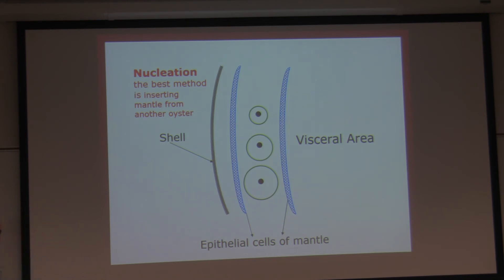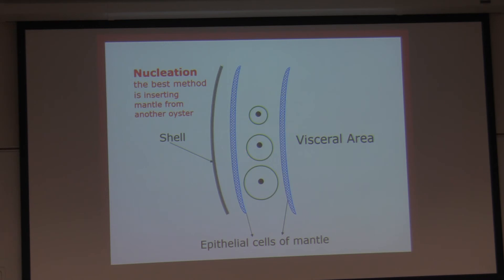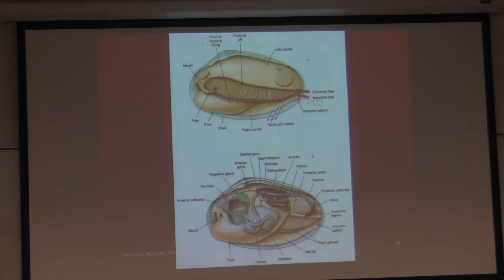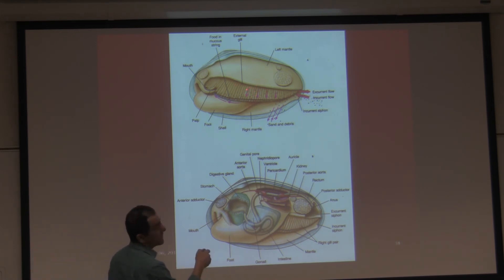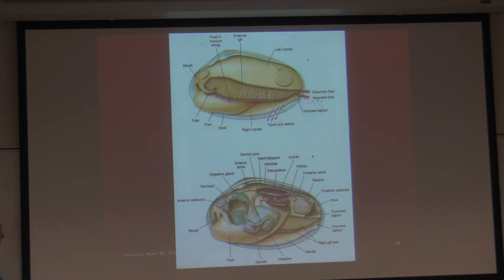For farm-raised pearls, the process is called nucleation. The best method is inserting mantle from another oyster. They tried putting wood or sand, but those don't give good quality pearls. When they cut mantle from another organism and insert it between the mantle and shell, the pearl is formed. After much research, they concluded that mantle from another animal gives the best quality pearl, but even so, farm-raised pearls are still cheaper than natural pearls.